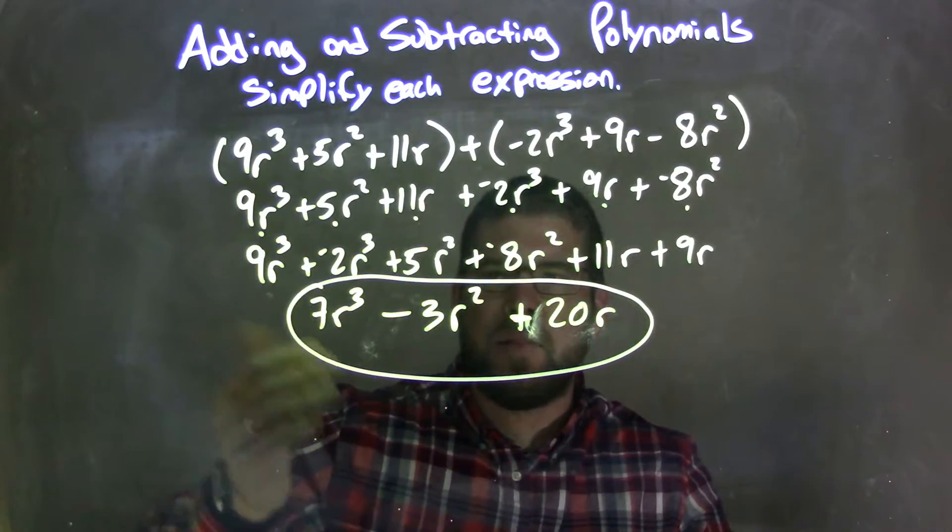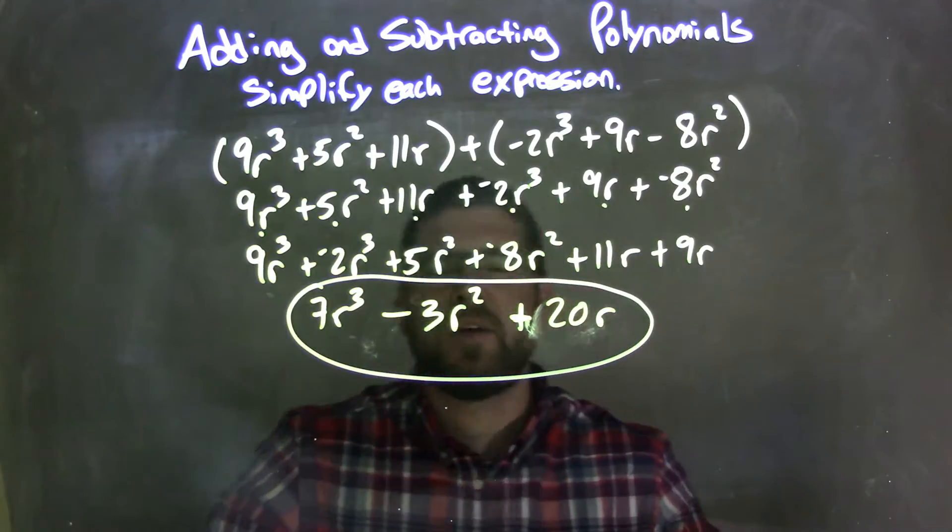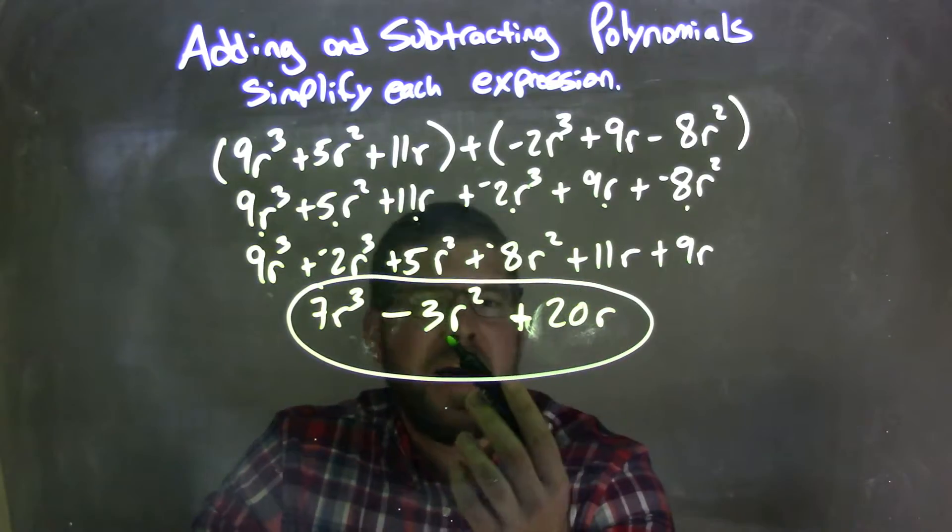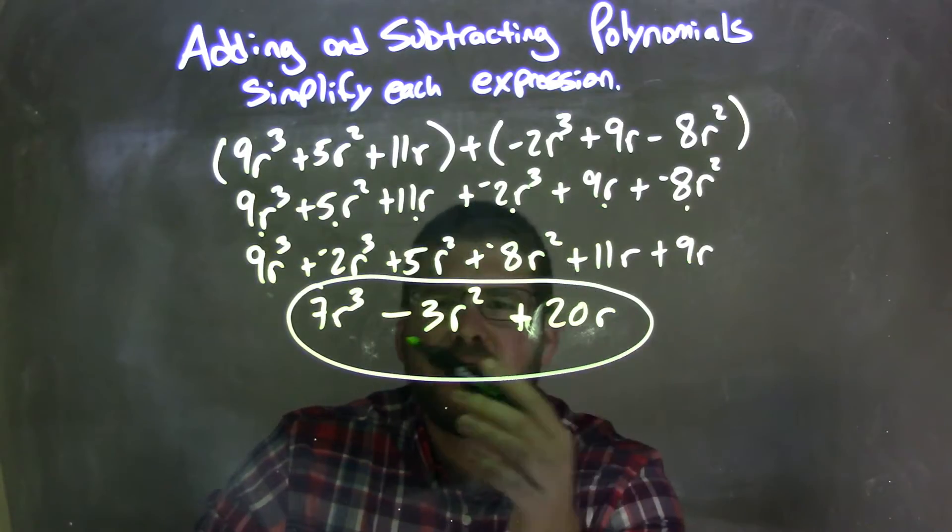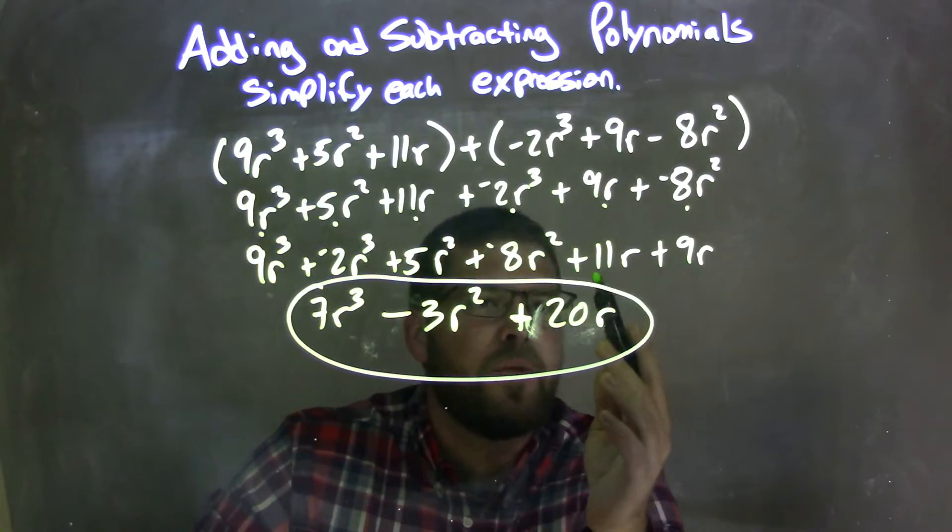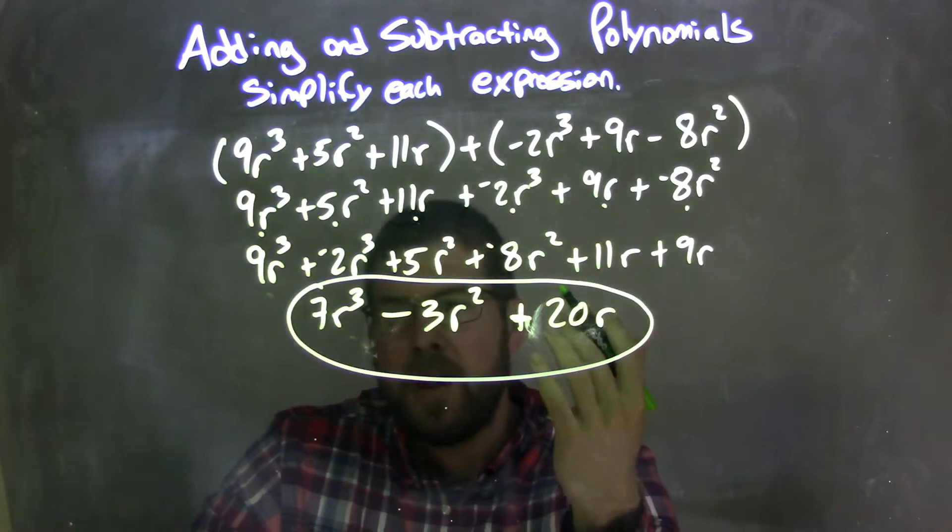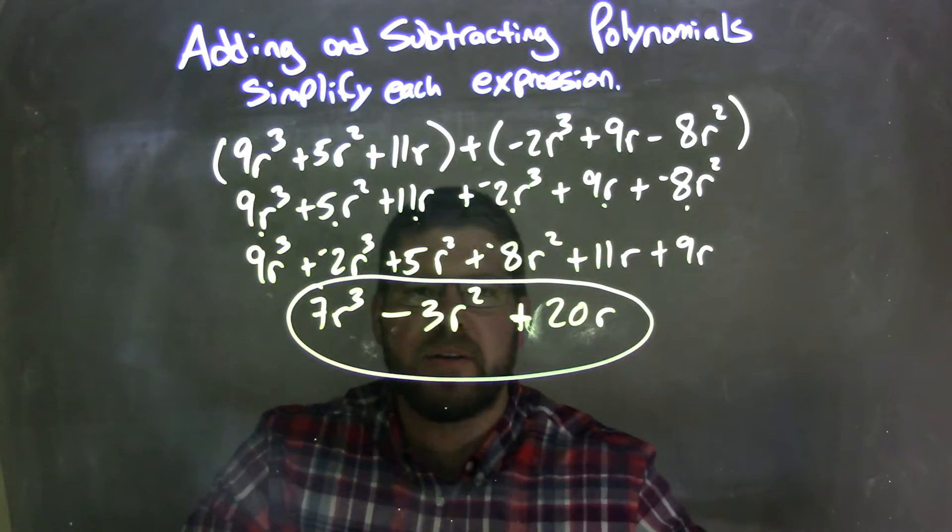I then simplified that, giving me 7r³, and then here my r², I knew there was a plus and negative r², but I rewrote it as a minus 3r² because it just looks nice and neat for my final answer here. And then 11r plus 9r is 20r. So now we have our final answer, which is 7r³ minus 3r² plus 20r.